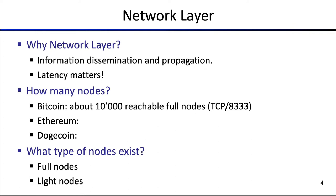So why does the network layer matter? We have all the information — about blocks, transactions, and even peers — being disseminated over the network layer. This dissemination and propagation is happening in an asynchronous manner, meaning that not all nodes receive all the information at the same time, and there's often no guarantee on the bound, on the time delay at which a particular node receives data. If the network propagation is based on IP, the internet protocol, then data transmission is really just a best-efforts protocol, so there's no guarantee that your packet even arrives.